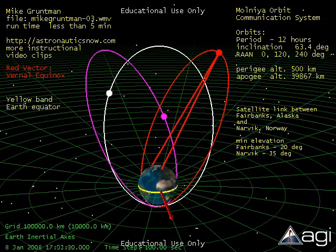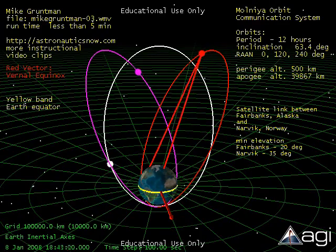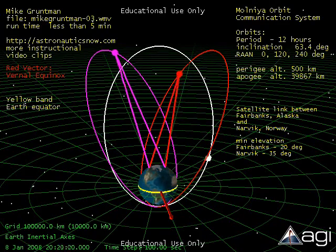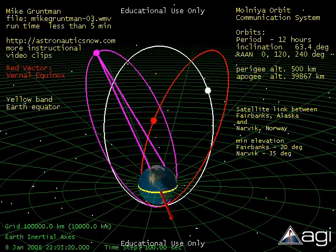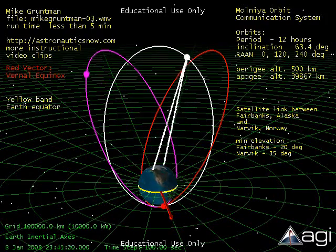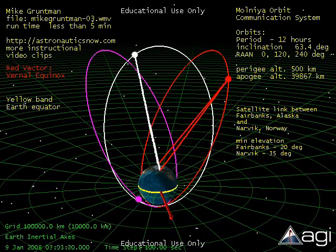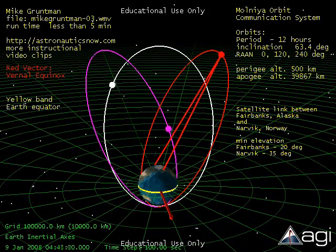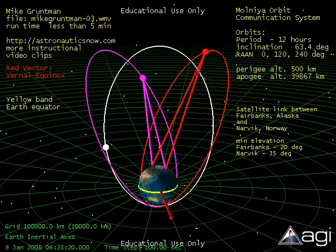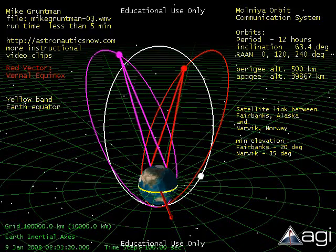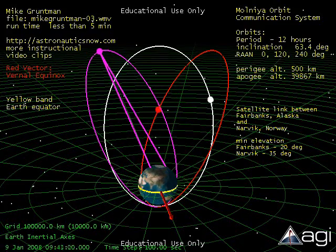To achieve a continuous communication link 24 hours per day between these two points, one needs three Molniya satellites with orbits distributed in longitude. In other words, one needs three satellites in three identical Molniya orbits with different right ascensions of ascending nodes.